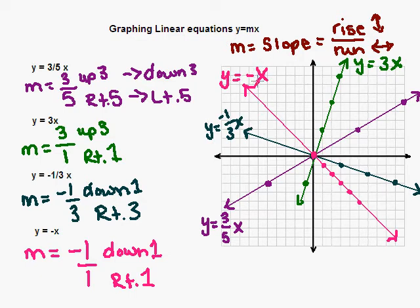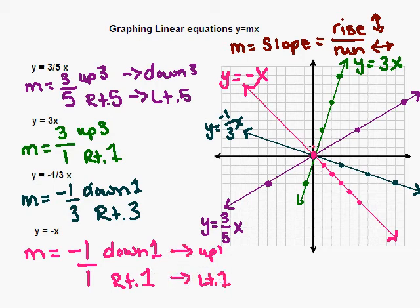Remember, if it's just an x there's always an imaginary one in front of it. And the same applies here — you could do the complete opposite: instead of down one to the right one, you could go up one and to the left one. Do the complete opposite of both and you'll still be on that line. Keep that in mind in case you run out of graph paper — you can do the complete opposite to get a third point. I hope this helps. If you have any questions, please let me know. Bye-bye.